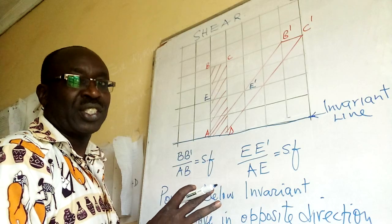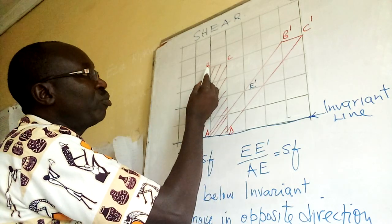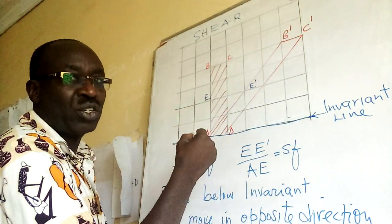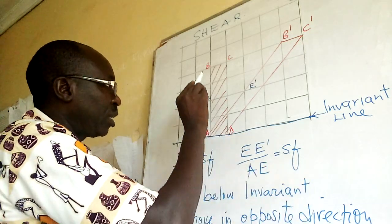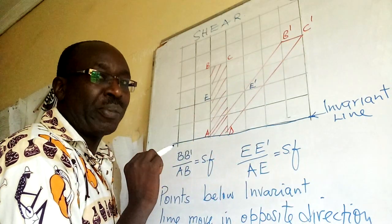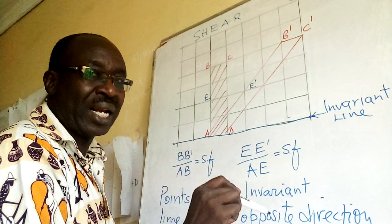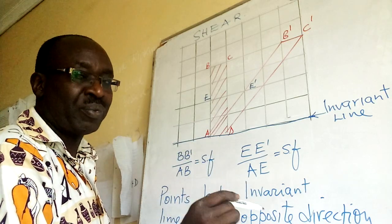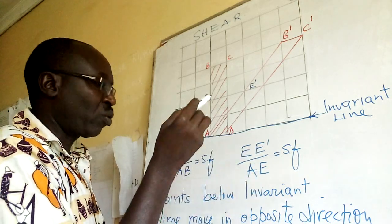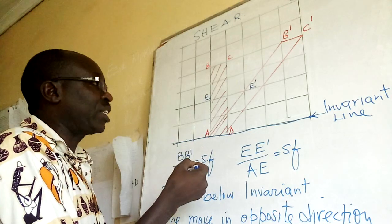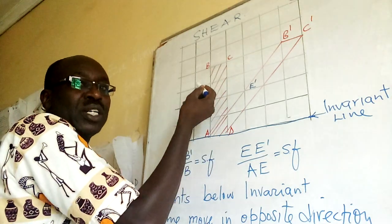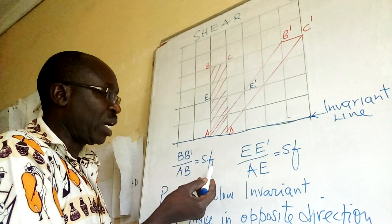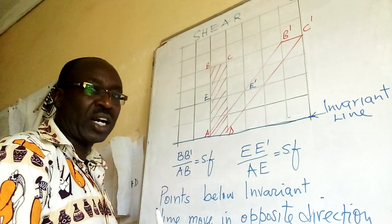Now what you need to know here is, look at this: the movements the points make parallel to the invariant line, those movements when you divide by the vertical height, how far is that point from the invariant line, you get what I will call scale factor.